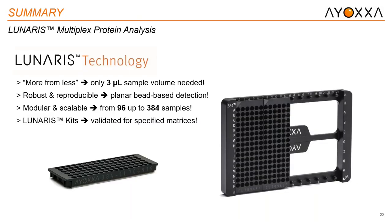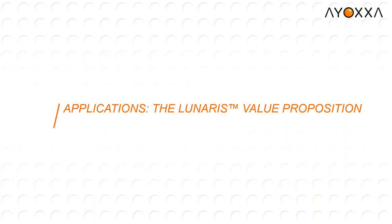Overall, the Lunaris system allows the user to achieve more from less — using as little as 3 microliters of sample. Our technology is robust and reproducible, and we offer a wide selection of kits for your research needs. For the next section of the webinar, I want to go over a few scenarios where our customers are using Lunaris technology to aid their research in different fields.